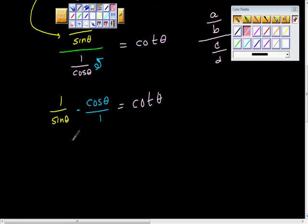I think maybe you can see what's going to happen here. One times cosine theta is cosine theta. And sine theta times one is sine theta.